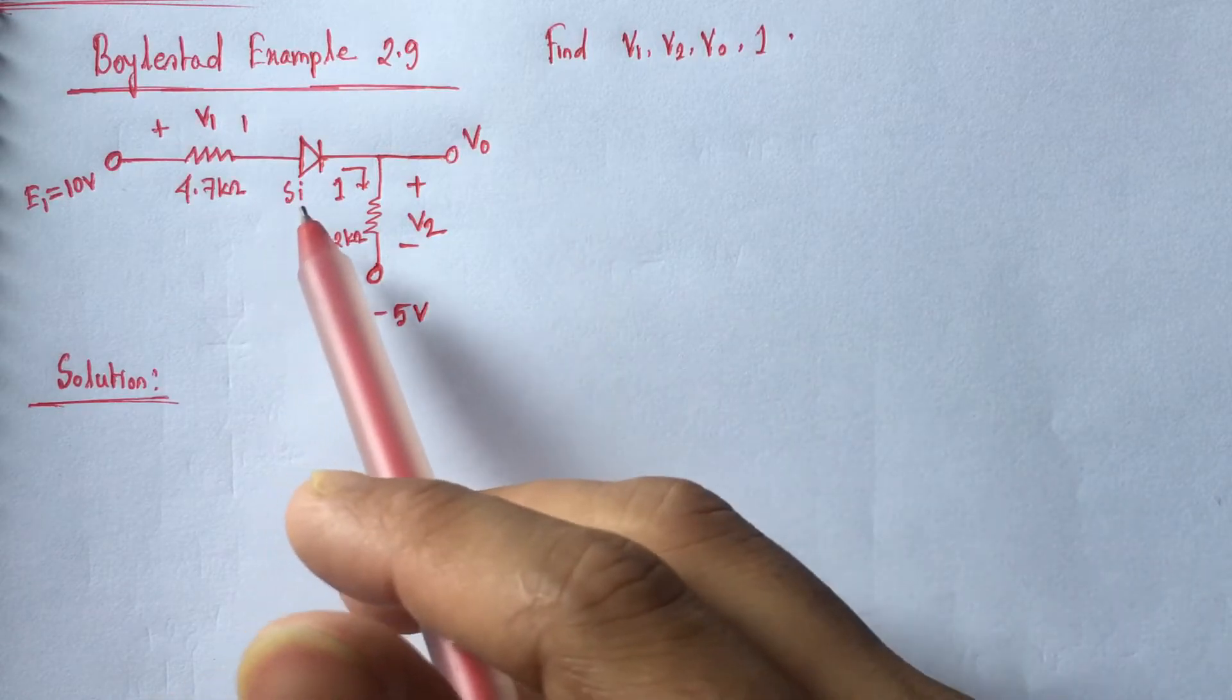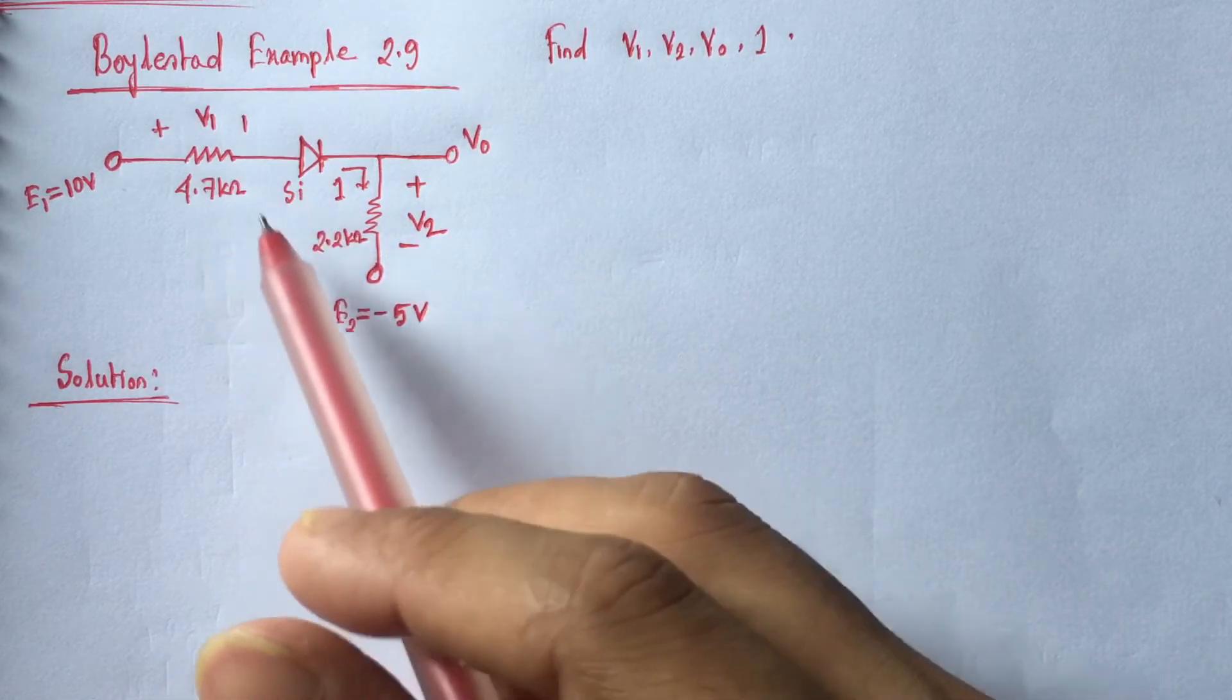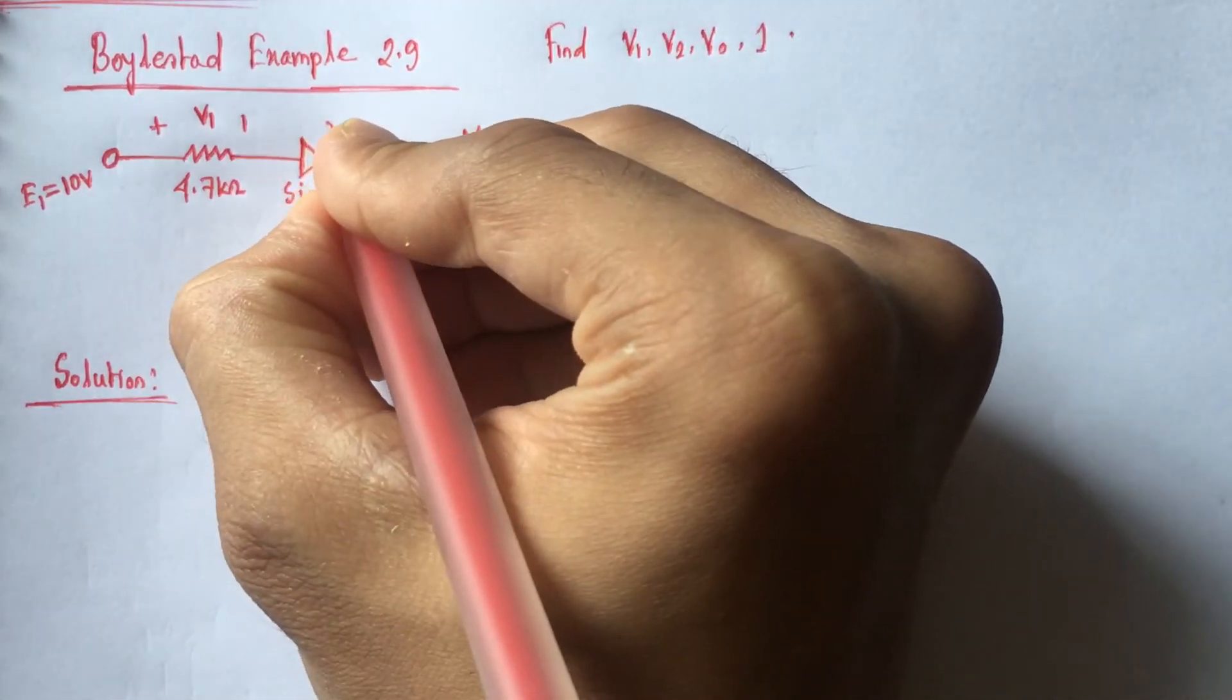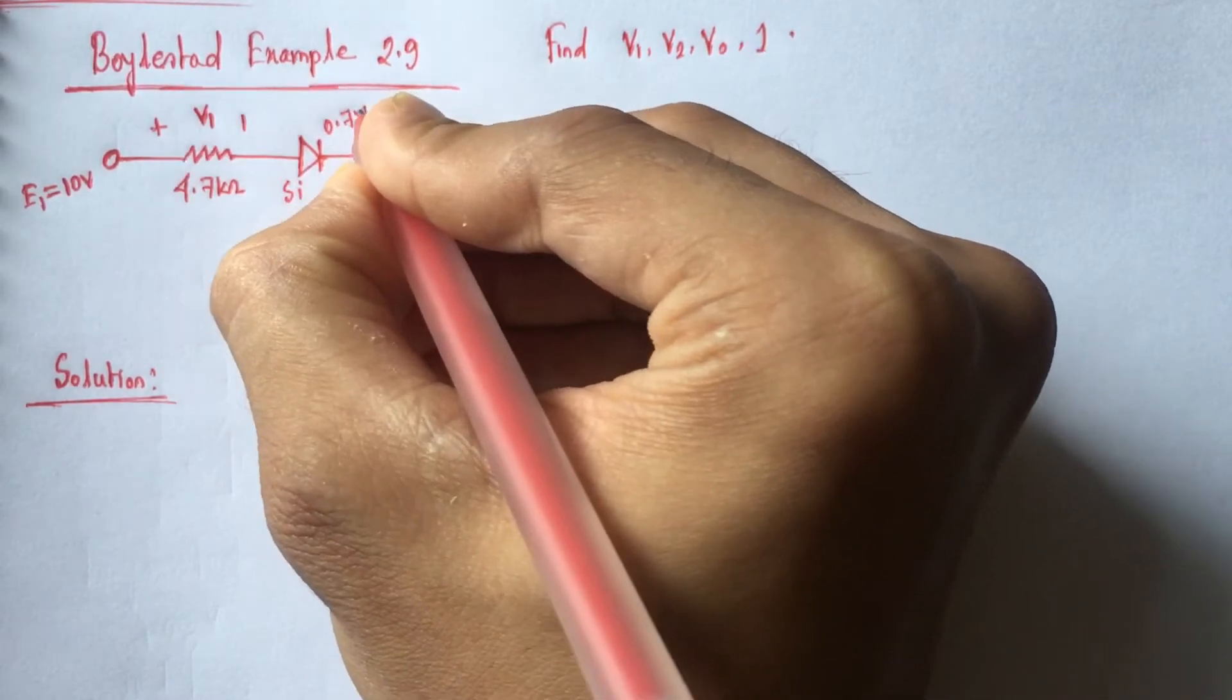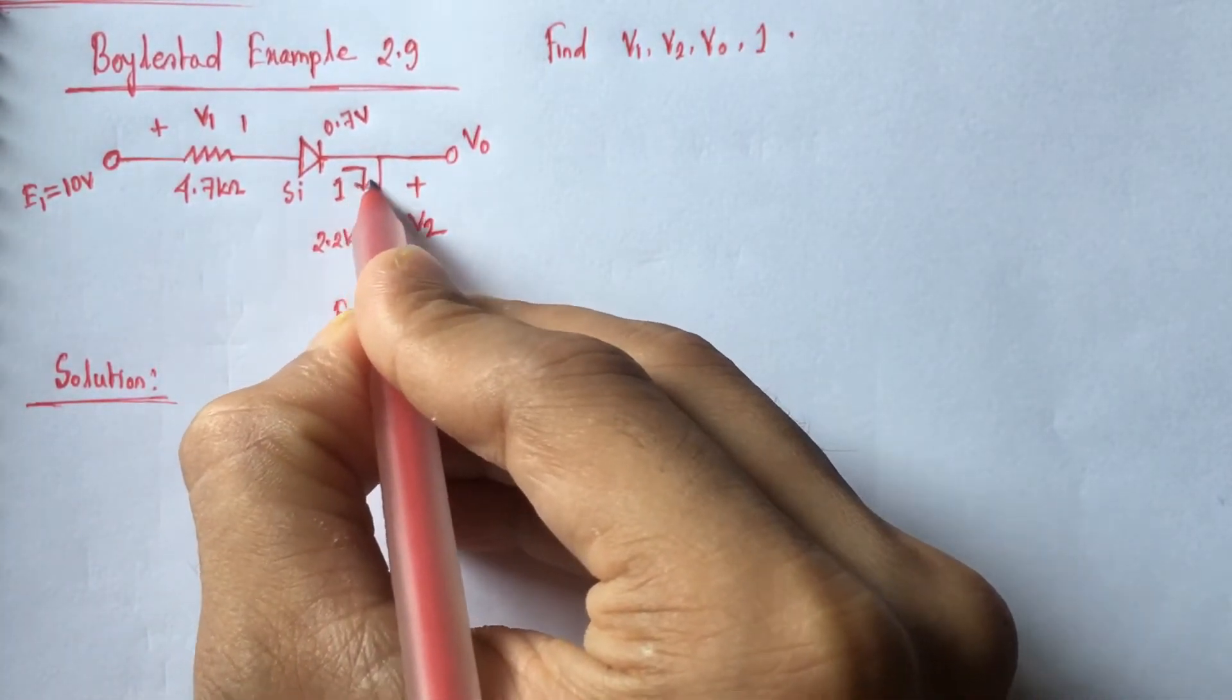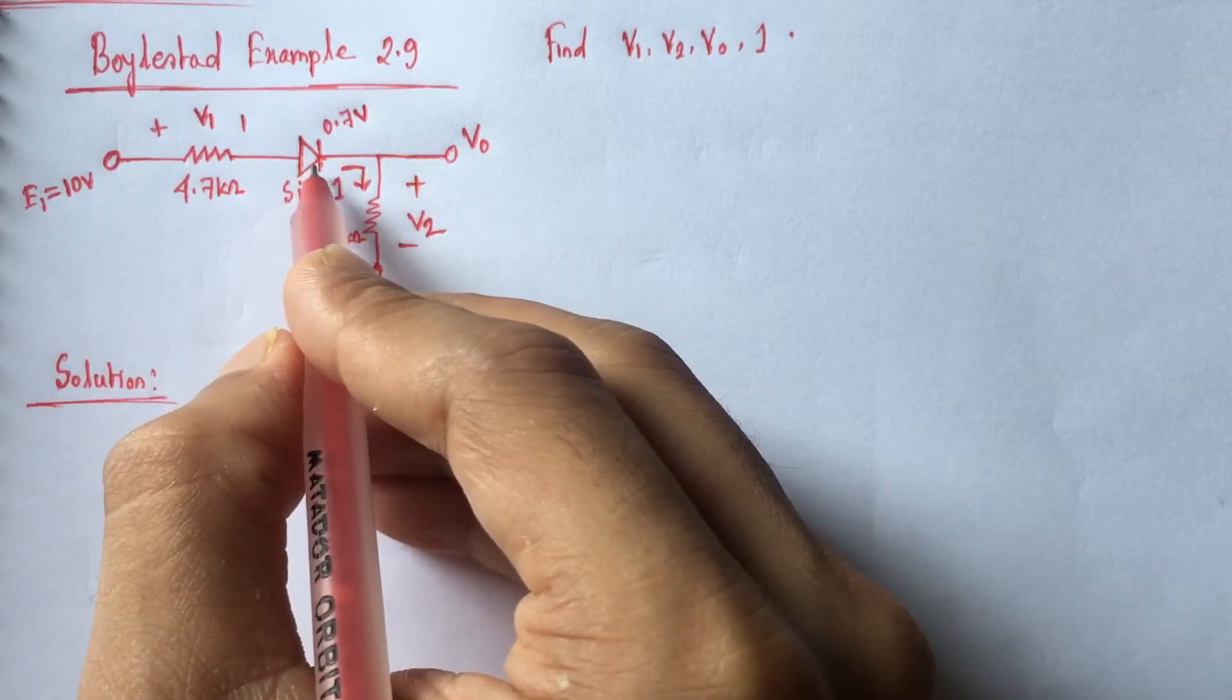Now for solving the diode related problem, first we have to identify the state of diode and this is a silicon diode which has a voltage drop of 0.7 volt and this is fixed. Now we see that the biasing voltage is 10 volt and the diode is forward biased.